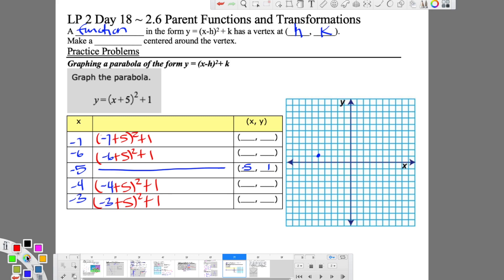So now I can just leave it in one color. We're going to do inside the parentheses first. So I have negative 7 plus 5. Well, that's negative 2 squared plus 1. Negative 2 squared is 4, plus 1 is 5. So negative 7, if I go 5, 6, 7, and I'm going to go up 1, 2, 3, 4, 5, and there we go.